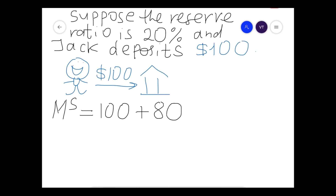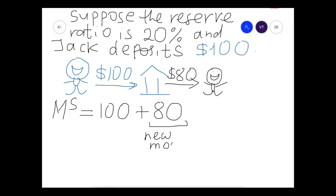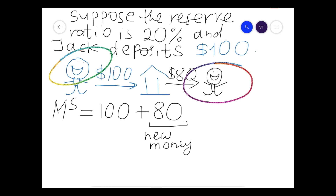When the bank gave someone that $80 loan and they received it, where did the $80 come from? Nowhere — this is new money, created out of the original deposit of $100. Now both people can spend money, and the money supply is $180.